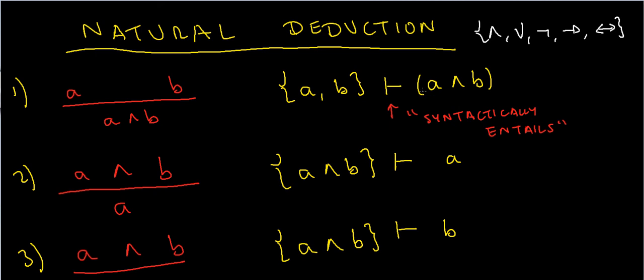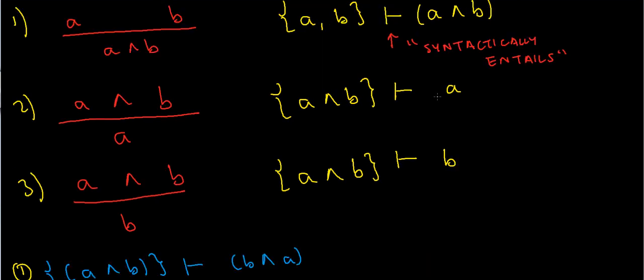Now the next two rules are basically the same as each other, just in a slightly different order. Number two says the following: If I assume that A and B is true, so the conjunction of these two statements, then I can deduce that A is true. Now what would this mean for example? Suppose that A is the statement that I am happy and B is the statement that the sun is shining. Now if I am happy and the sun is shining, then surely it's true that I'm happy.